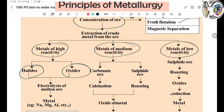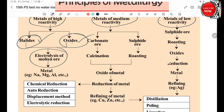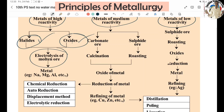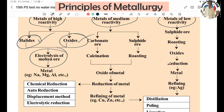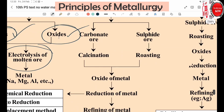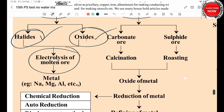Metallurgy: Electrolysis is used for highly reactive metals. Reduction Reactions are used for moderately reactive metals. Electrolysis and Reduction Reactions — these are the necessary extraction methods.